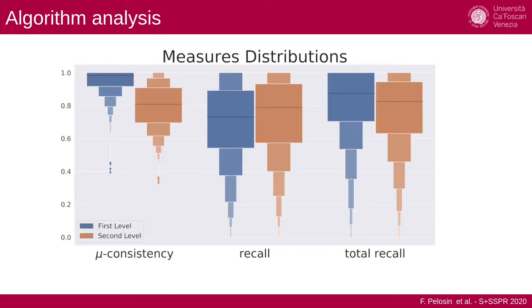You can see that we achieve very high mu-consistency, good recall, and in particular we have less consistency in the second semantic level because it's much closer to the micro-semantic level, so it's much more difficult.